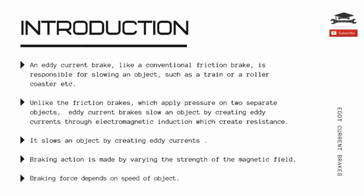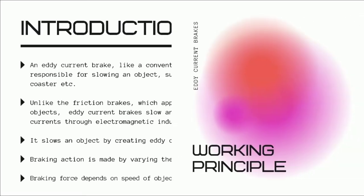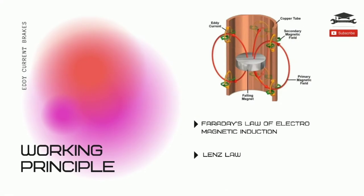The braking action is made by varying the strength of the magnetic field and depends on the speed of the object. Moving into the working principles of the eddy current brake system, two basic laws of electromagnetics cover them, namely Faraday's and Lenz's laws.